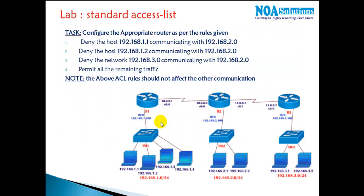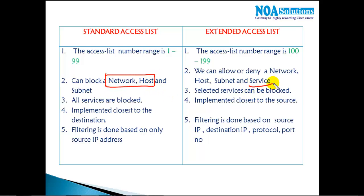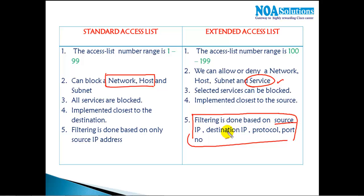In the next video we'll start with standard ACL labs, covering more theoretical and logical concepts on how ACLs work and how we implement and verify them. To summarize: standard ACLs can allow or deny a specific host or network; extended ACLs add service-based filtering and support advanced filtering based on source, destination, protocol, and port number. Standard ACL only checks the source address — those are the two major differences.